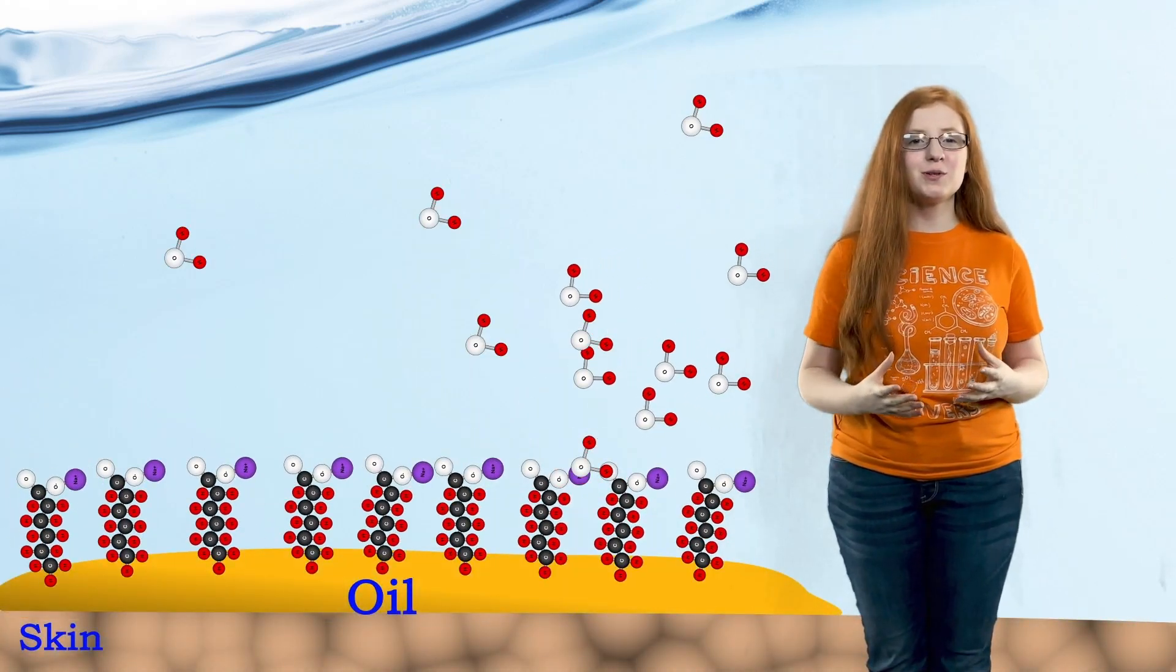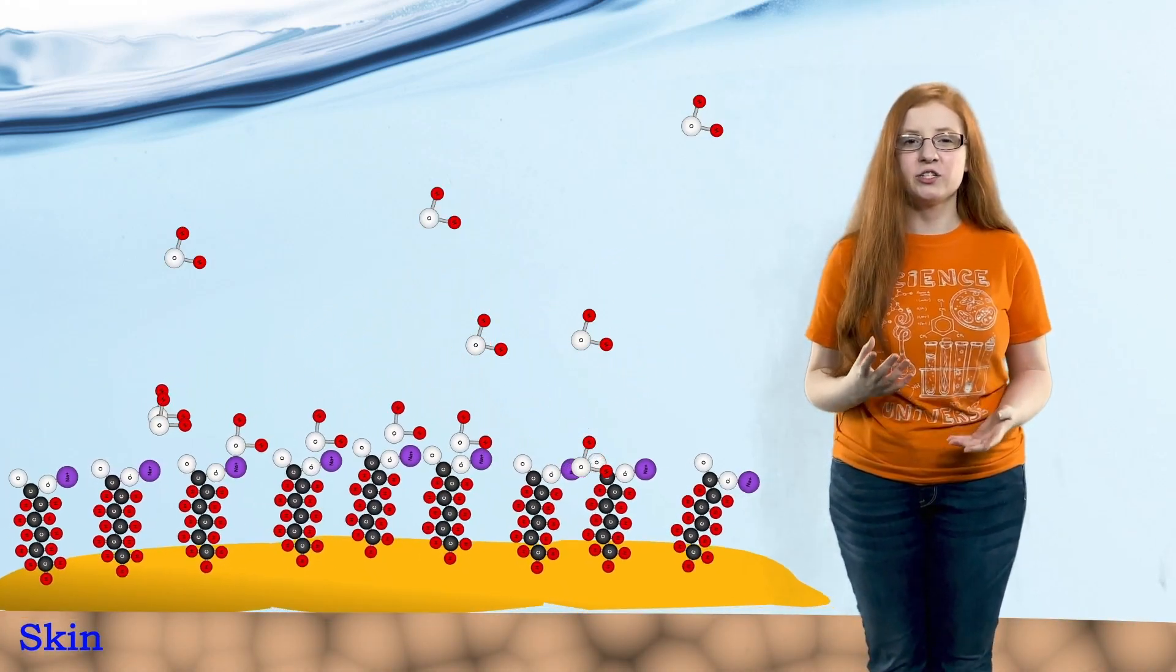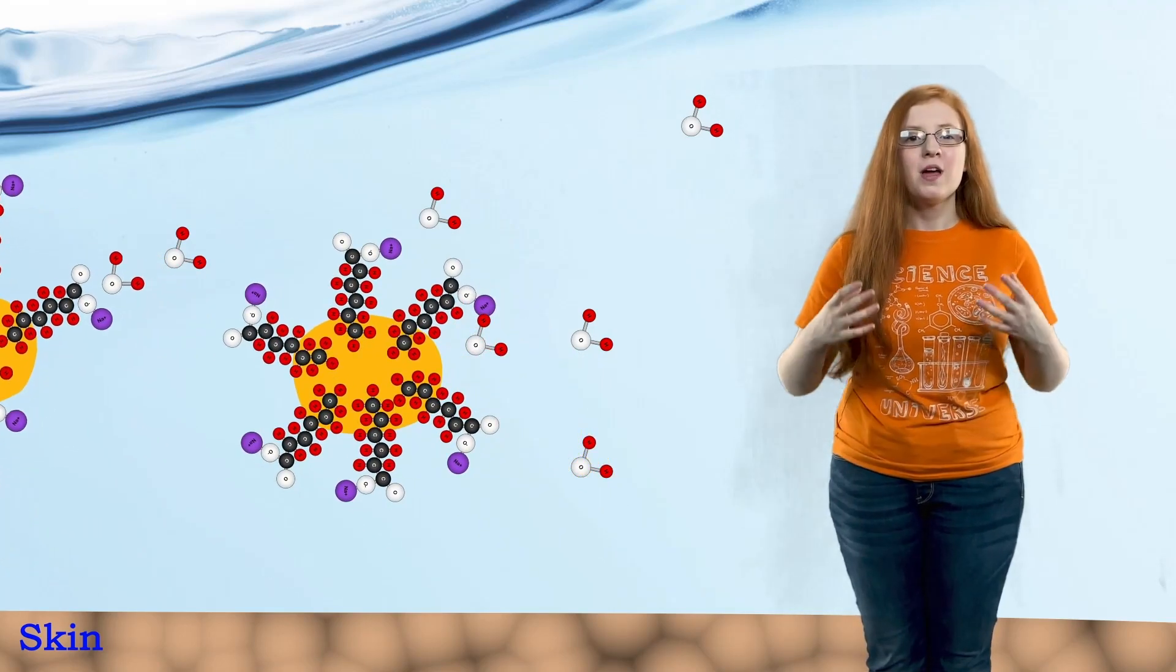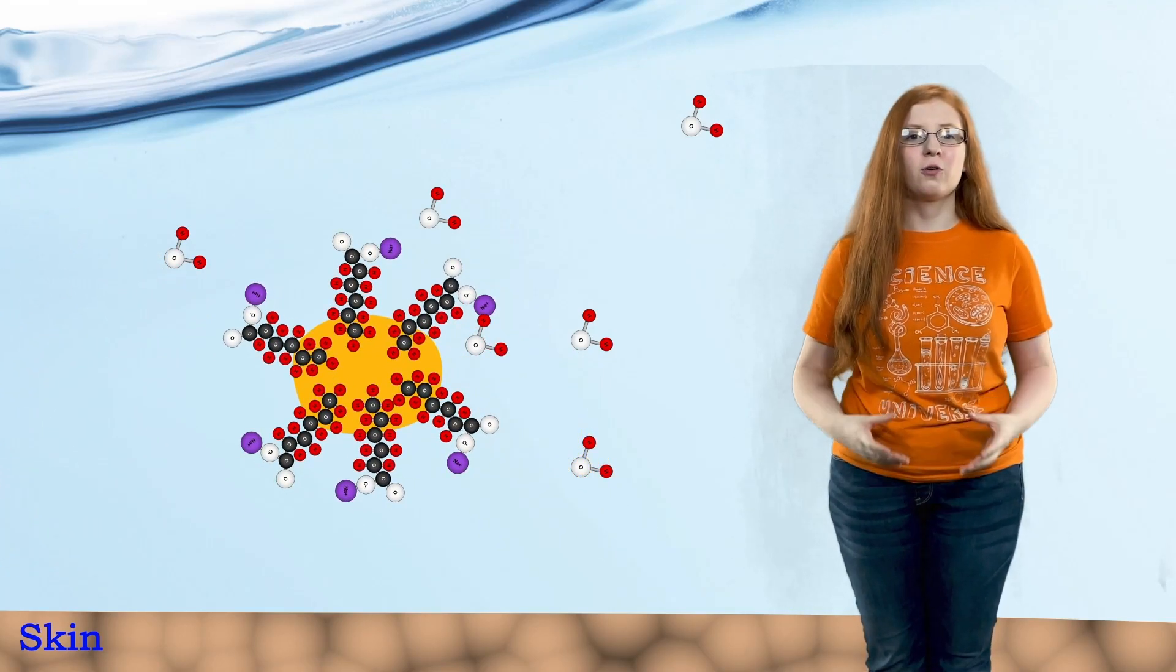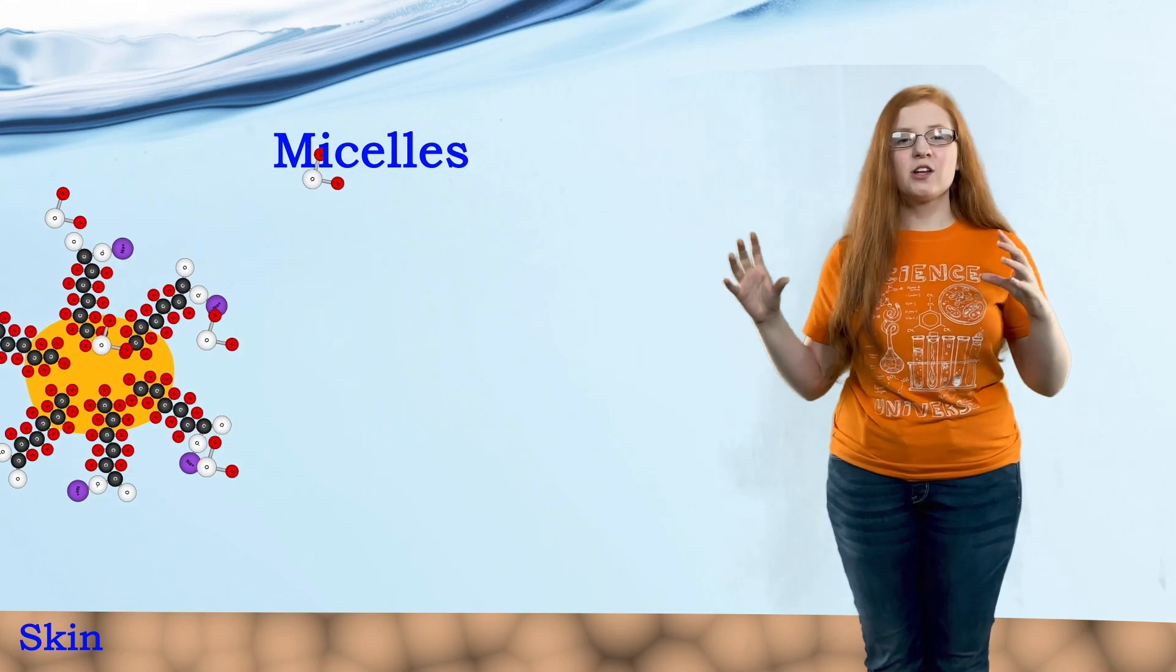Second, the fatty acid tail also loves to attach the dirt and oil that may contain these germs. The hydrophobic and hydrophilic part of the soap create little spheres that trap the dirt and oil, called micelles. Then they carry them off with the water, acting as connections between the water and the oil.